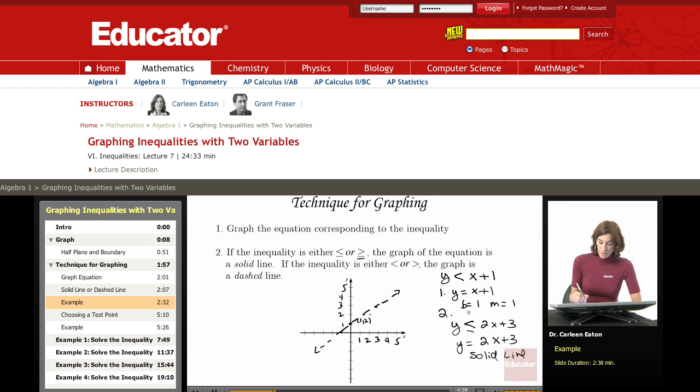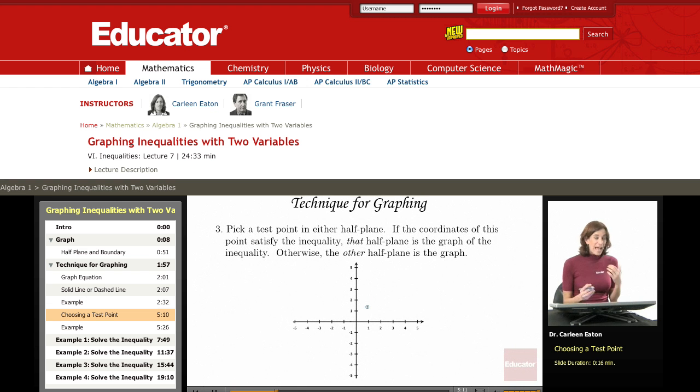Here, for my second step, I determined that I needed to use a dashed line. So my technique for graphing is I graph the equation corresponding to the inequality. In my second step, I need to figure out which half plane contains coordinates that will satisfy the inequality. That is done by choosing a test point.